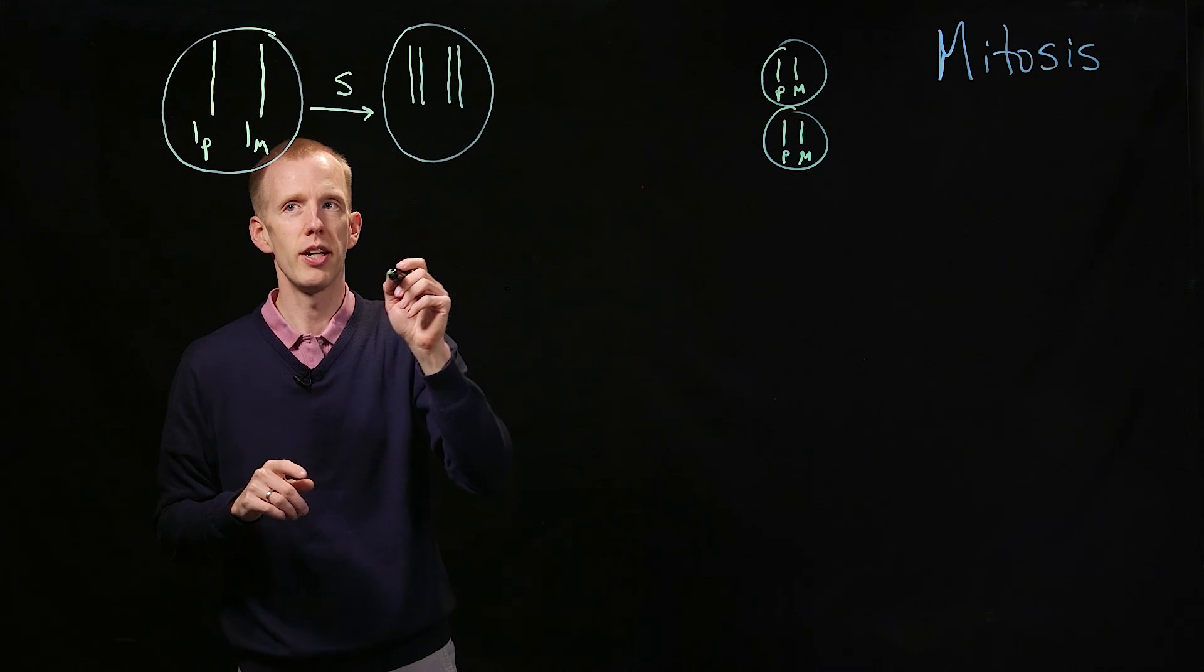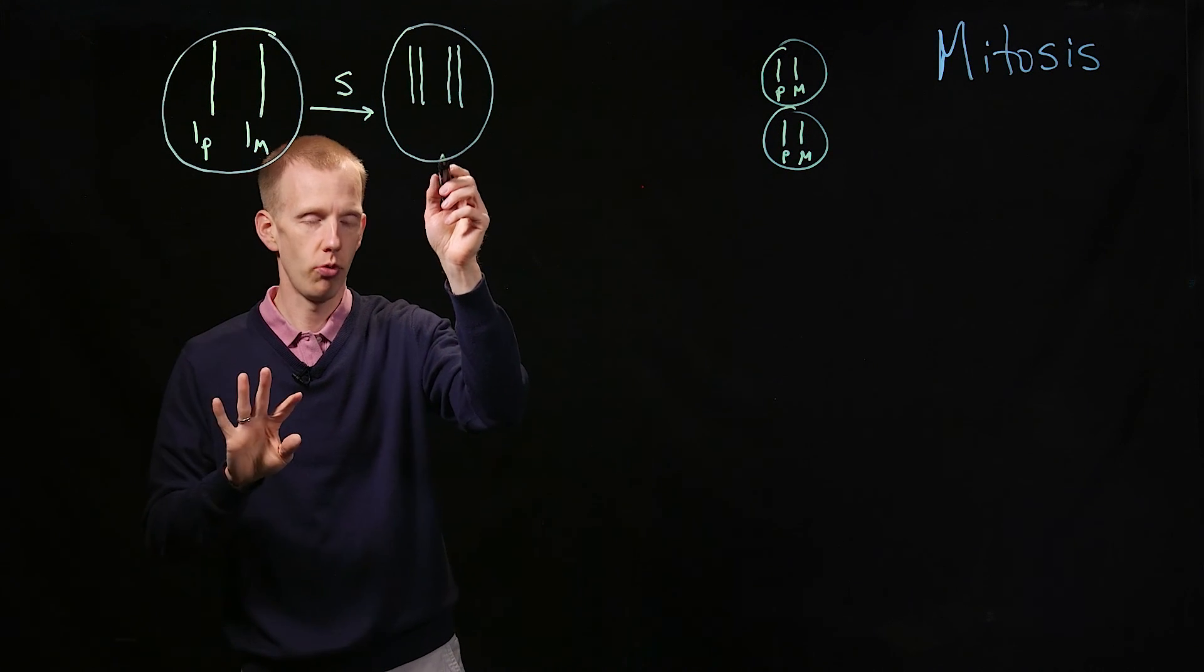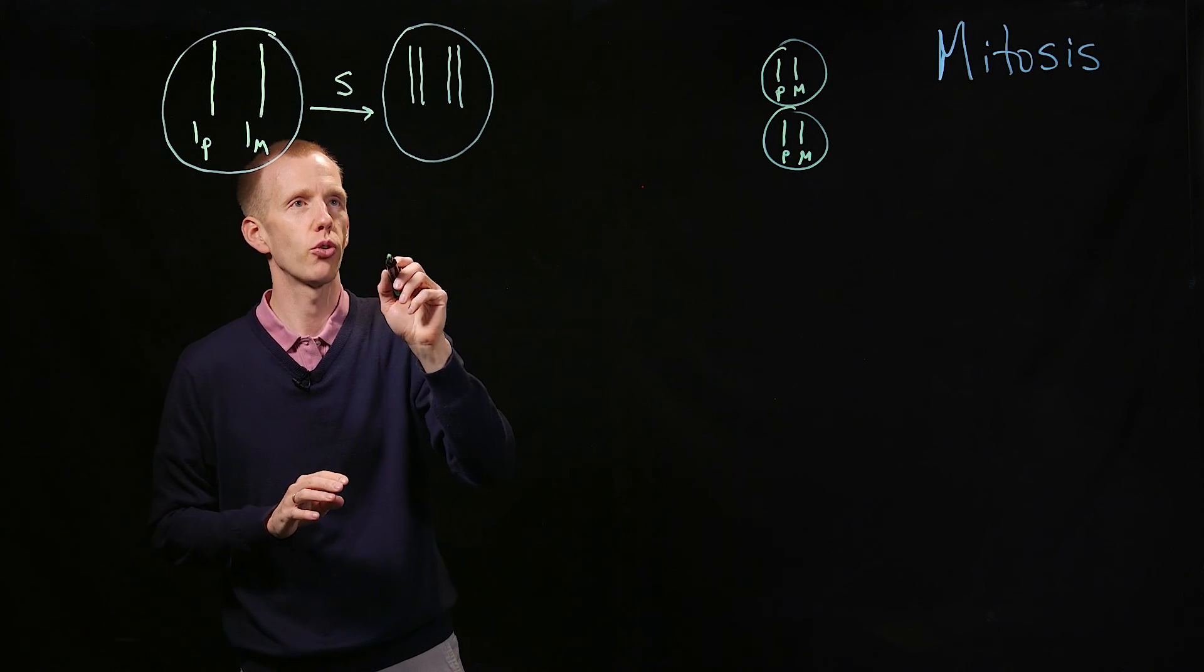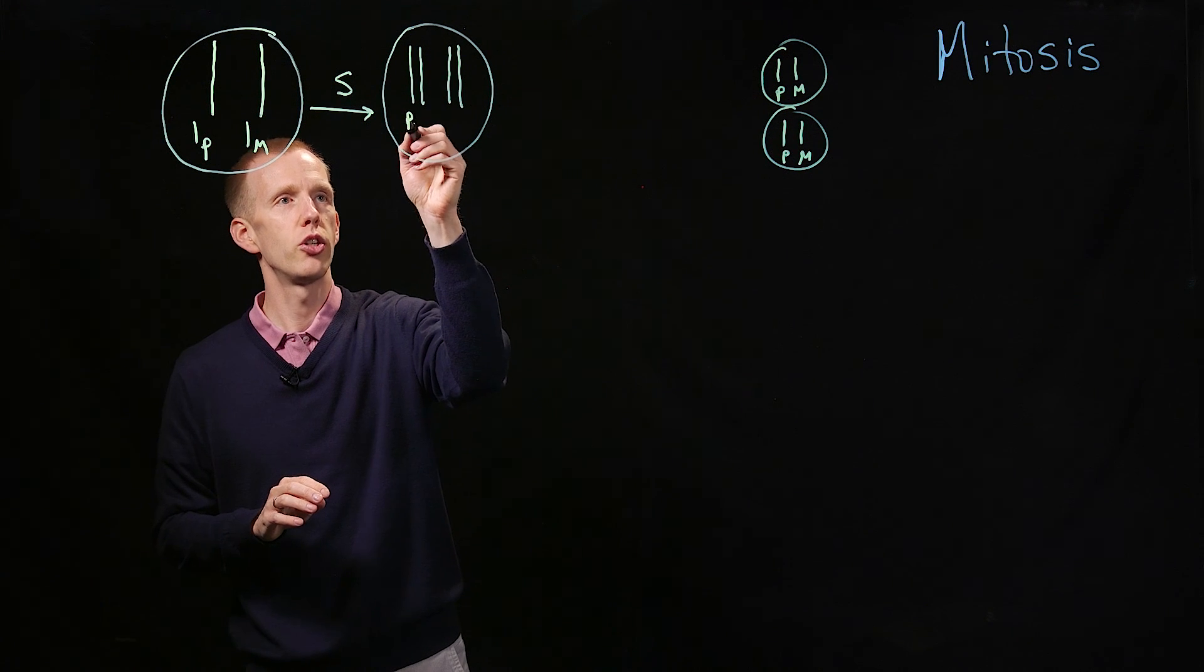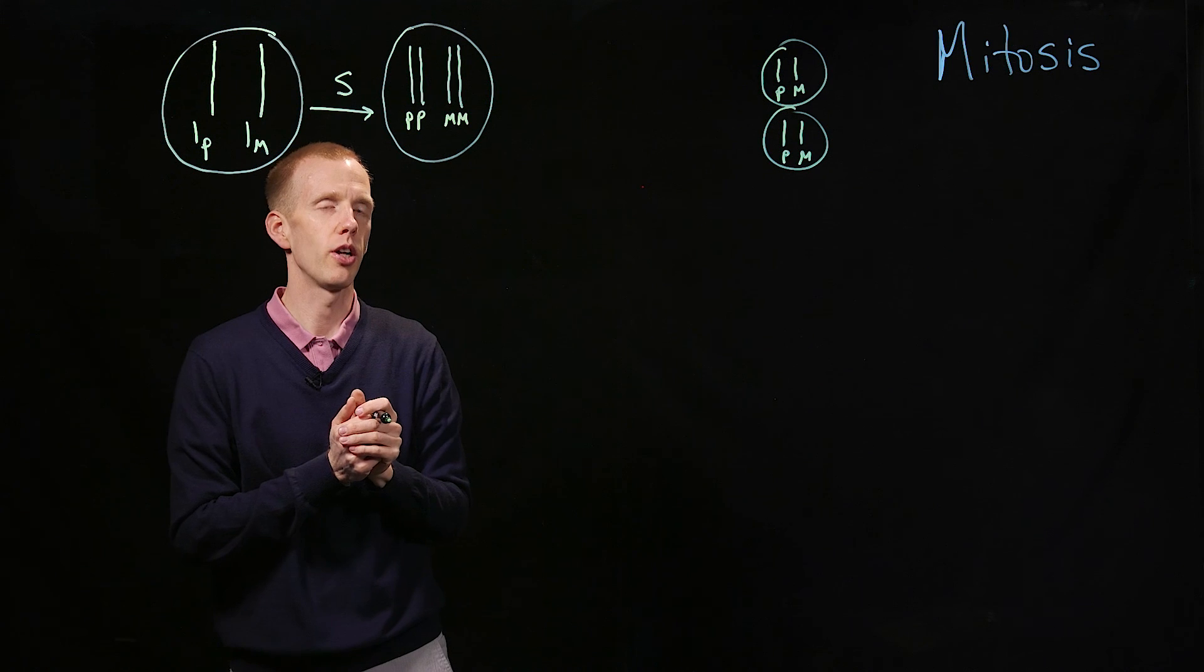They're now referred to as sister chromatids. So we went from chromosomes to two pairs, four total molecules, of sister chromatids. That's the two paternal versions and the two maternal versions next to each other.